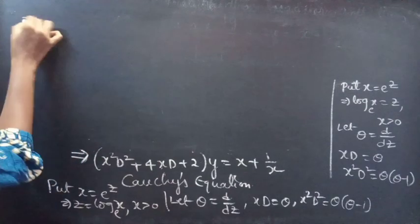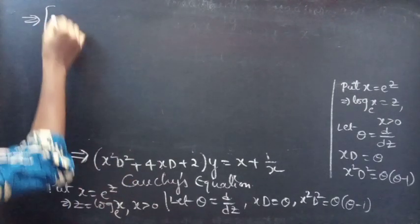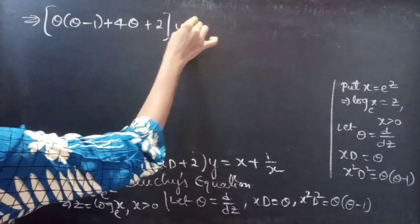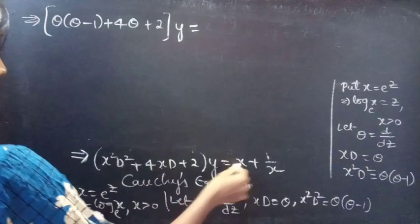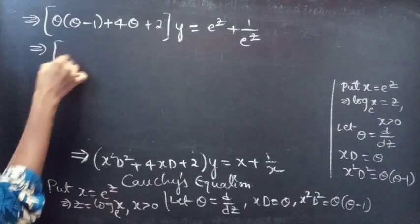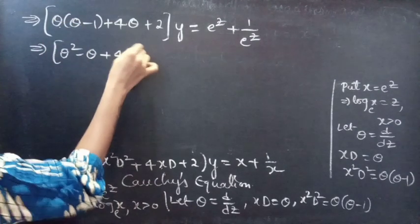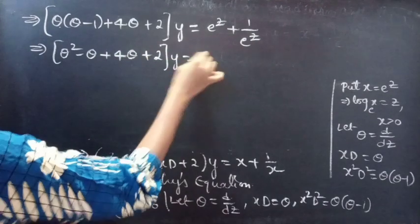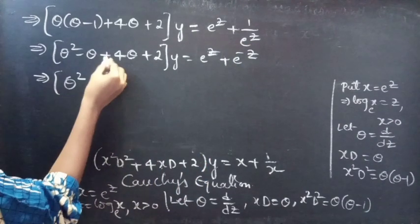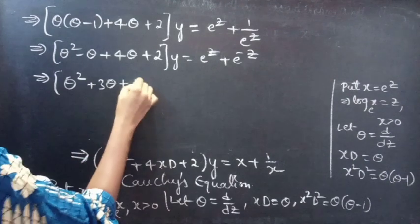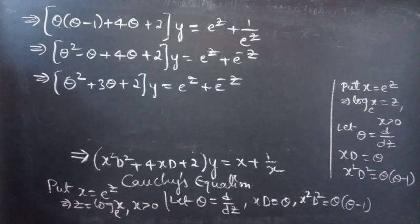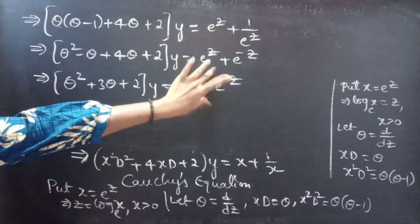Cauchy's equation becomes: replace x²D² by theta(theta minus 1) plus 4 times theta plus 2, into y equals e^z plus e^(−z). Expanding: theta² minus theta plus 4theta plus 2 into y equals e^z plus e^(−z). Simplifying the left side: theta² plus 3theta plus 2 into y equals e^z plus e^(−z).